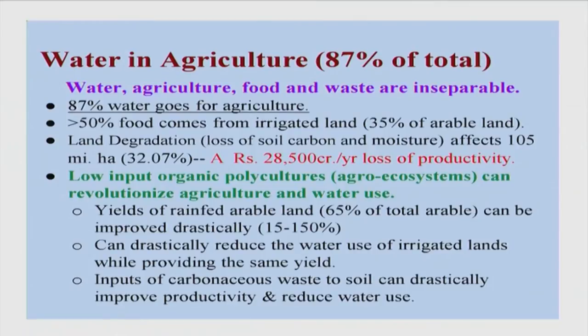Once we get an idea of where water is actually required, we can think better about how to use it more efficiently. If 87 percent of the water we extract goes to agriculture, we right away notice that water, agriculture, food, and waste are all inseparable and should be considered together to evolve solutions. More than 50 percent of the food comes from irrigated land, which is only 35 percent of the land, and we have roughly 30 percent degraded land. So we need to develop organic polycultures or agro-ecosystems which are water-efficient and low-input.